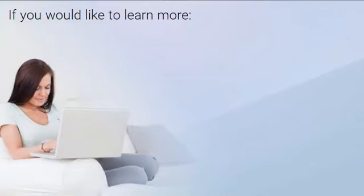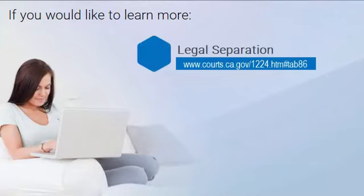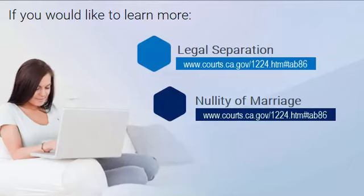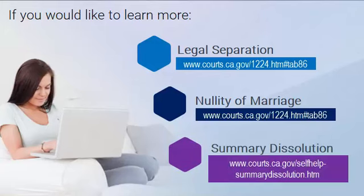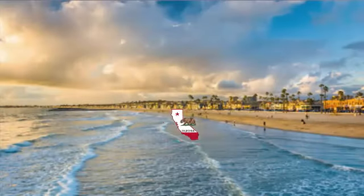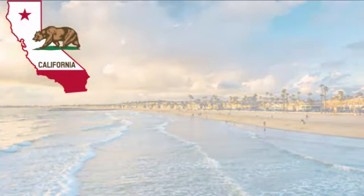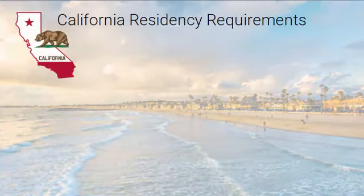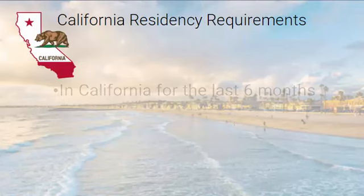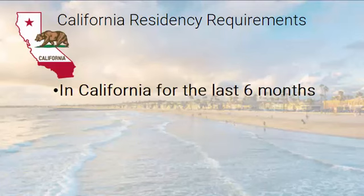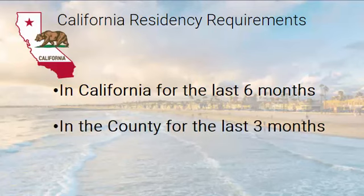If you'd like to learn more about legal separation or nullity of marriage, there is also a simpler alternative process with strict requirements called summary dissolution. In order to file for divorce in California, you must meet California's residency requirements, which means that either you or your spouse must have lived in California for the last six months and also resided in the county where you plan to file the divorce for the last three months.